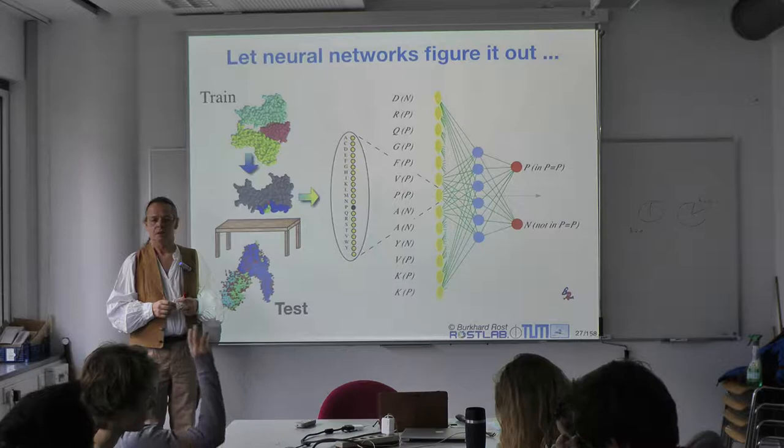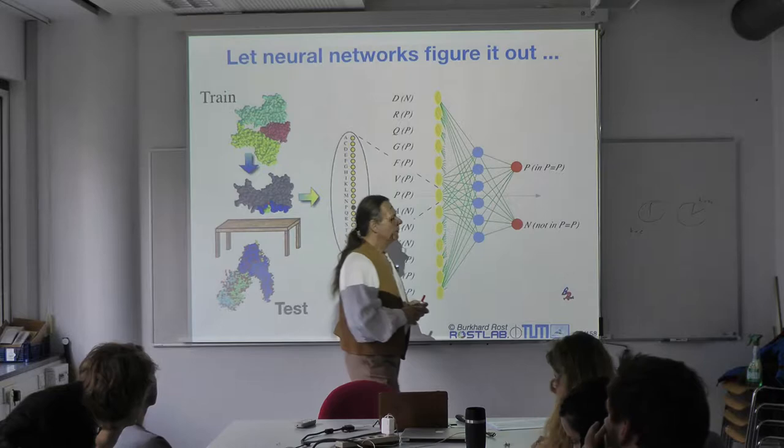For k equals 10, my validation set is going to be very small, which might be problematic in some cases. Typically, you absolutely must rotate. So for the split of k equals 2, in version 1 you use this half for training and this for testing, and in version 2 you swap: test and train.